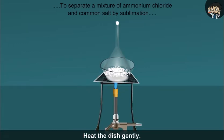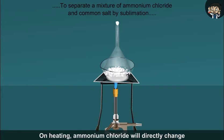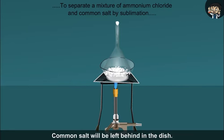Heat the dish gently. On heating, ammonium chloride will directly change from solid to vapor and condense on the upper cooler parts of the funnel. Common salt will be left behind in the dish.